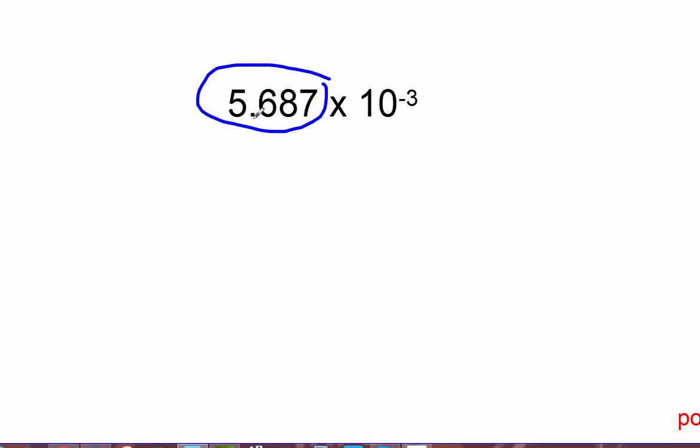And so the first part of this number, 5.687, this part of the number is called the digits. The second part is our power of 10, so times 10 and the negative 3, and that's our power of 10.